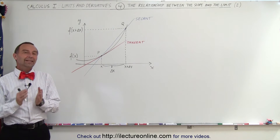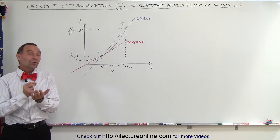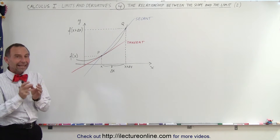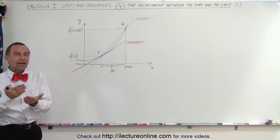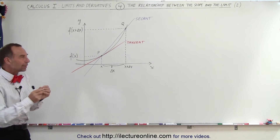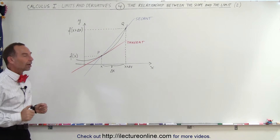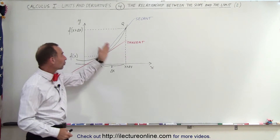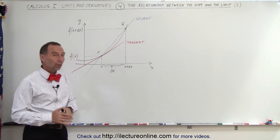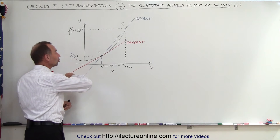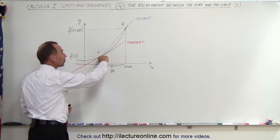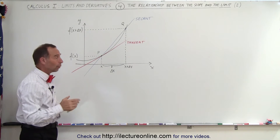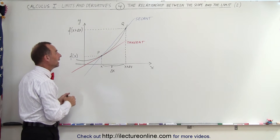Welcome to ElectronLine. In this video we're going to see the relationship between the slope and the limit and how to properly write the limit in this particular context. We're looking at a function f of x on the xy plane. We drew a tangent line which touches the graph of the function at point P and only at that point — that's the definition of a tangent line.